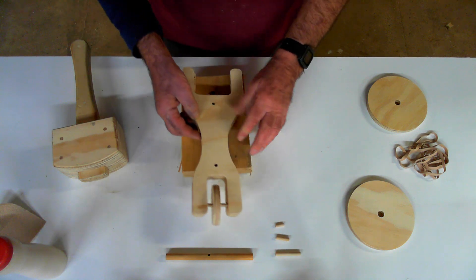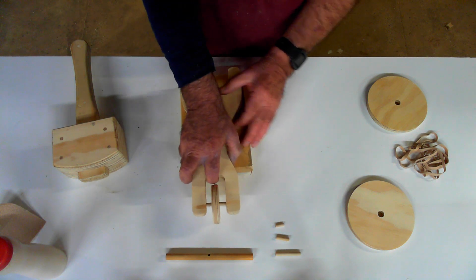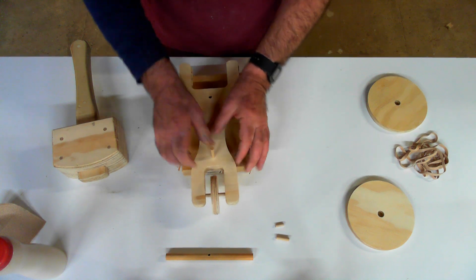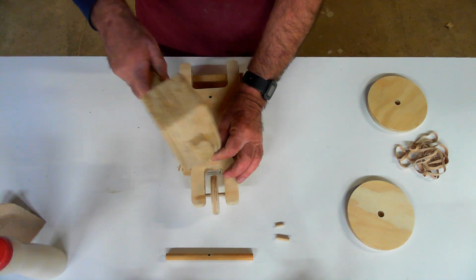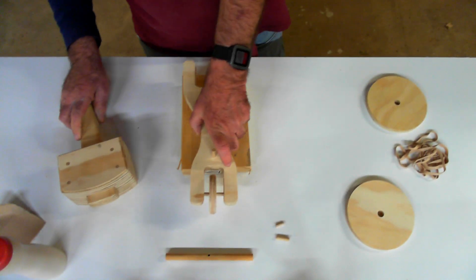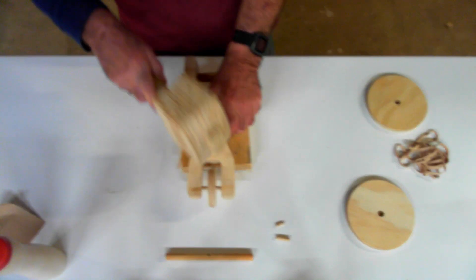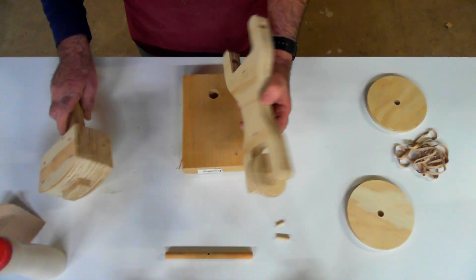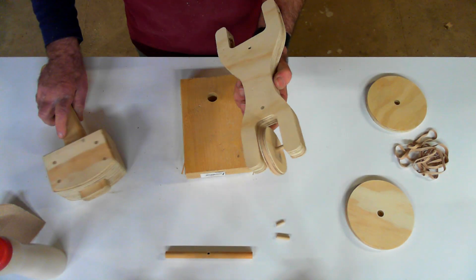And then we'll use our anvil and some dowels to assemble it. So the first part we want the longest dowel, the two inch dowel, and it goes in the front by the front wheel and just kind of line things up, give it a tap. And you want to tap it until it's flush on the other side. One more whack. That looks right.